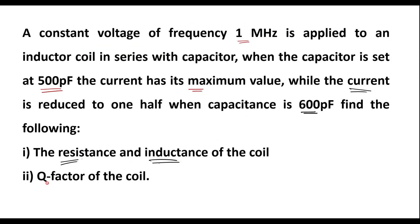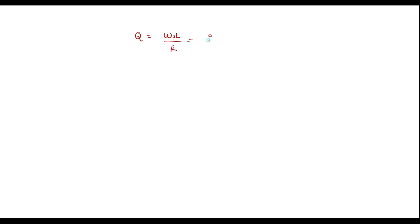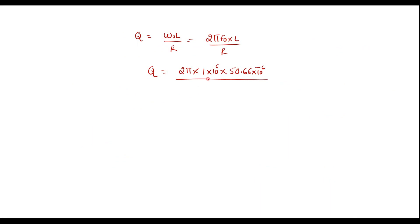We have now calculated inductance and resistance. Now let us calculate the Q factor. Q = ω₀L/R = 2πF₀L/R = (2π × 1×10⁶ × 50.66×10⁻⁶) / 30.63 = 10.39. Thus Q, the quality factor of the coil, is 10.39.